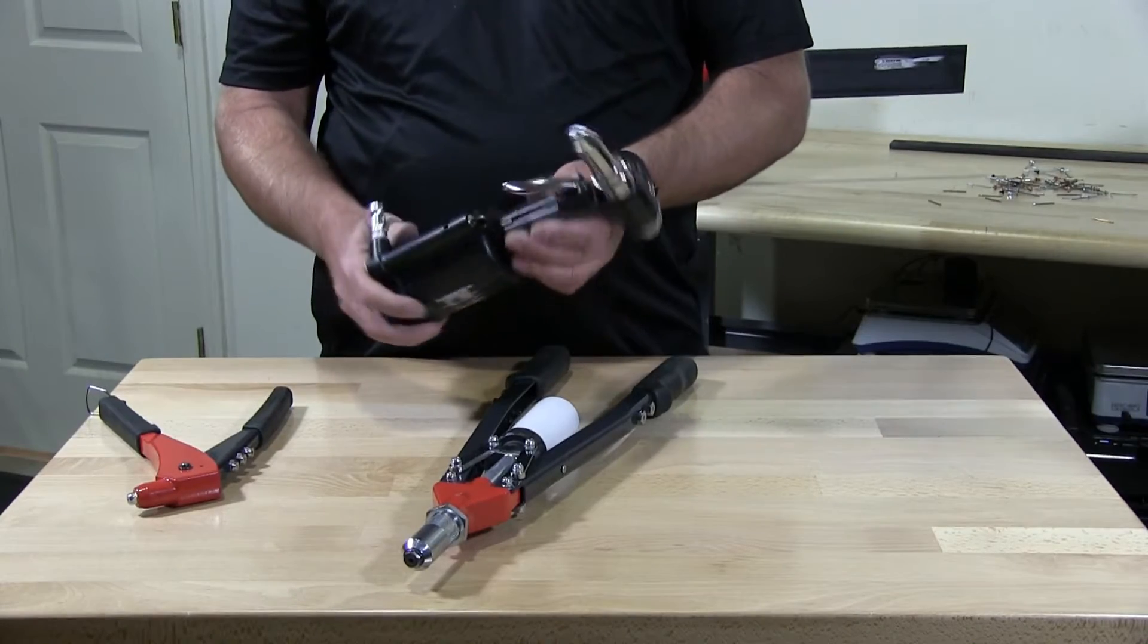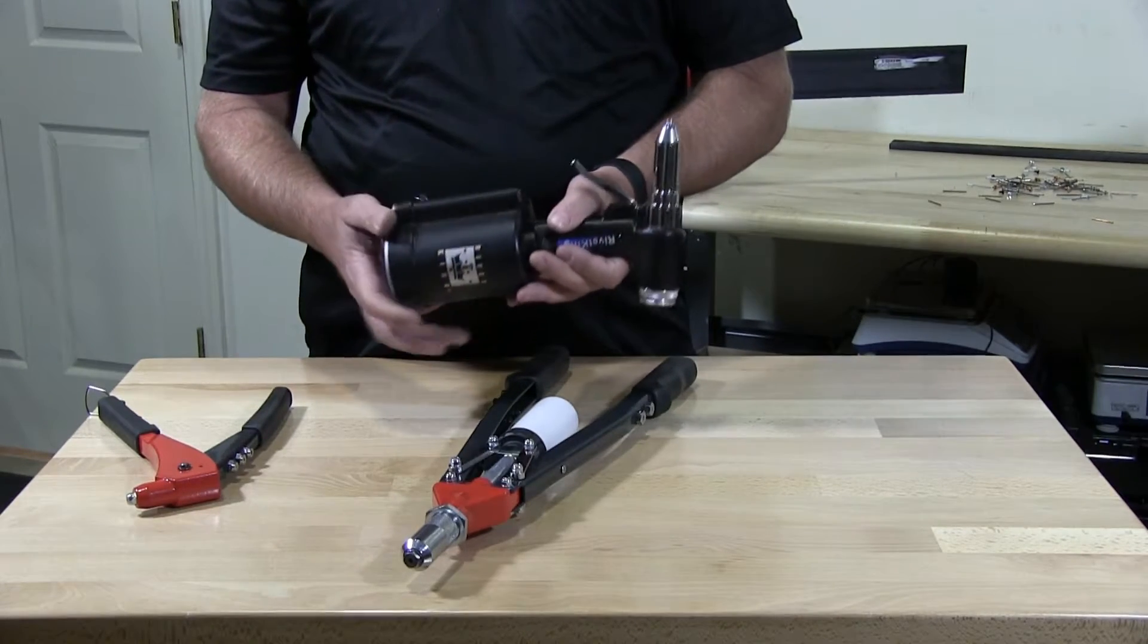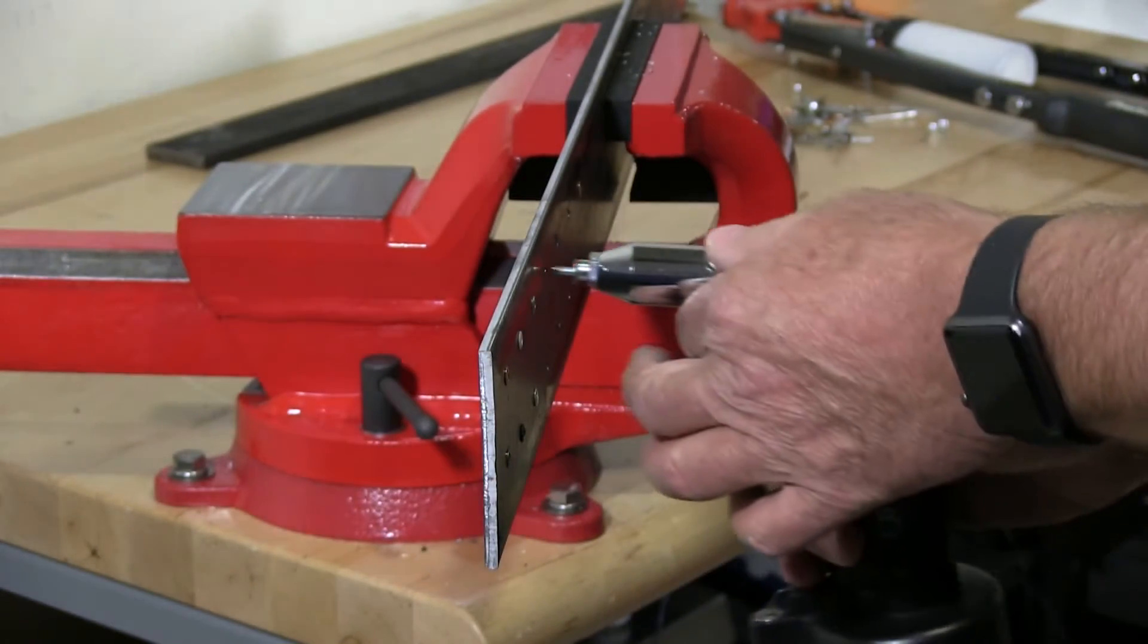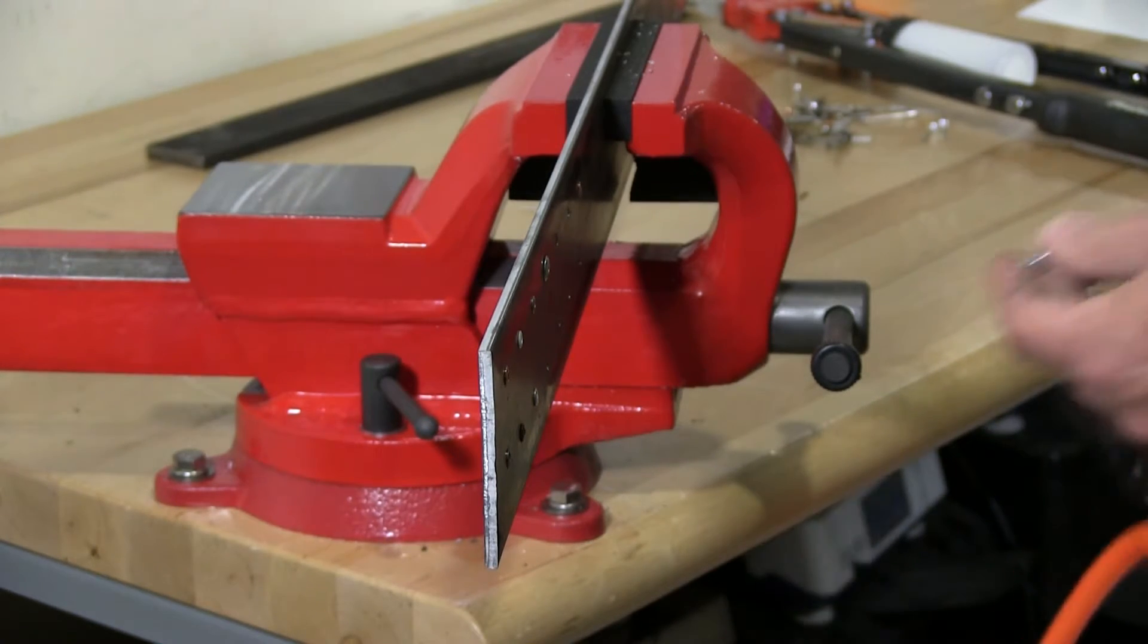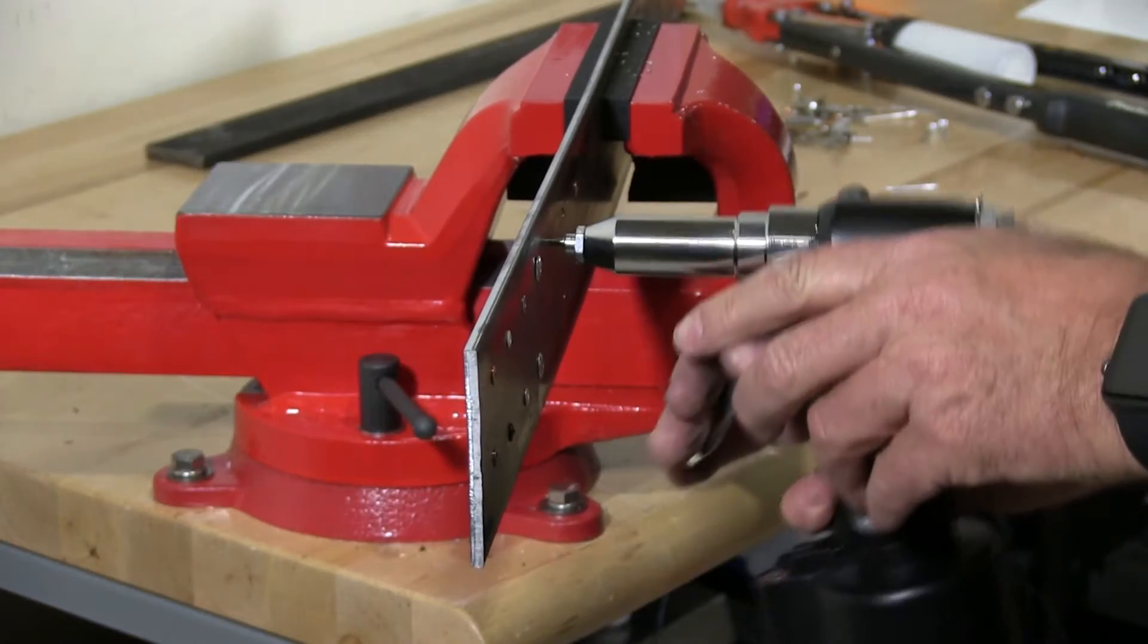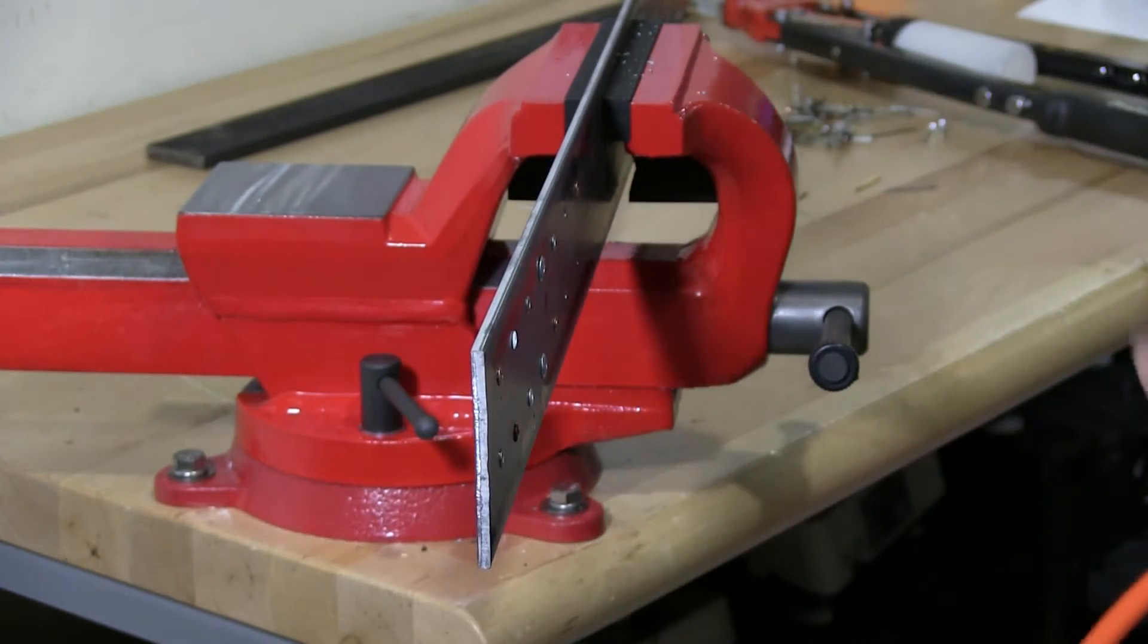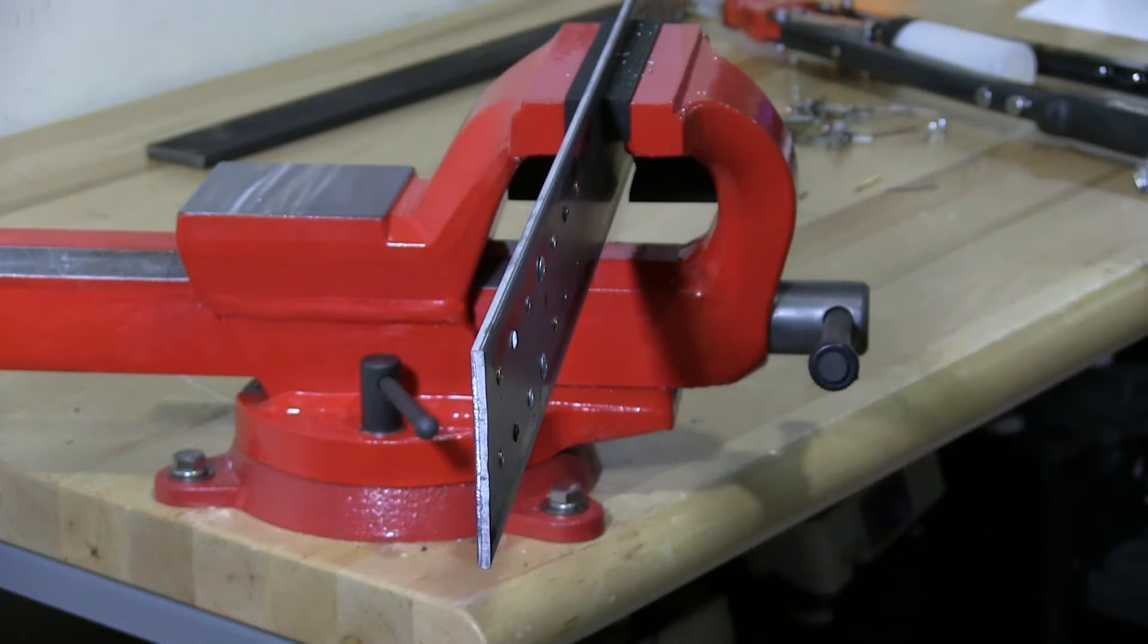This is a pneumatic rivet tool and obviously you need to have an air source to supply air to it. You need about 80 pounds of air, 60 to 80 pounds. So I'm just going to install the mandrel into the rivet tool. I'm just going to install it. Watch this. Fast action. Quick.